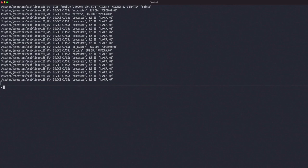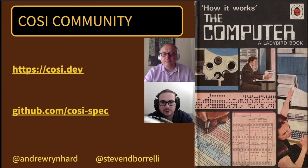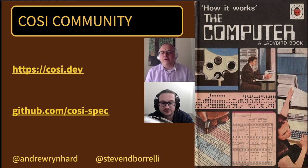That is all the time I have for the demo, and I hope by now you can see the potential we have in Cozy. Cozy is completely open source and released under the Apache license. The specification and code can be found at github.com/cozyspec. Today we're also announcing Cozy.dev, a website for all things Cozy related. We'd love for you to join us. Thank you for attending.